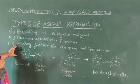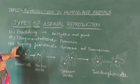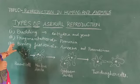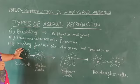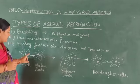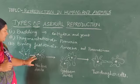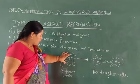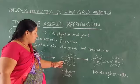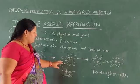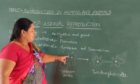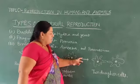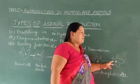In binary fission, starting from the parent cell of Amoeba: one parent cell with one nucleus — the nucleus divides into two parts, then the cytoplasm divides into two parts, each nucleus with its own cytoplasm — and again two daughter cells develop.